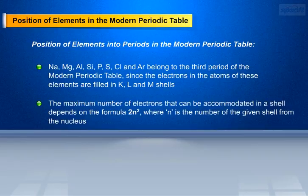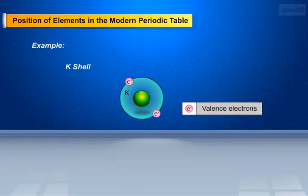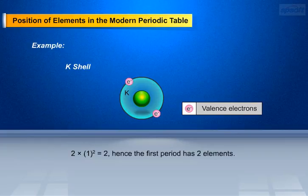The maximum number of electrons that can be accommodated in a shell depends on the formula 2N², where N is the number of the given shell from the nucleus. For example, in K shell N equals 1, as K shell is the first shell from the nucleus. Then 2 × 1² equals 2, hence the first period has 2 elements.